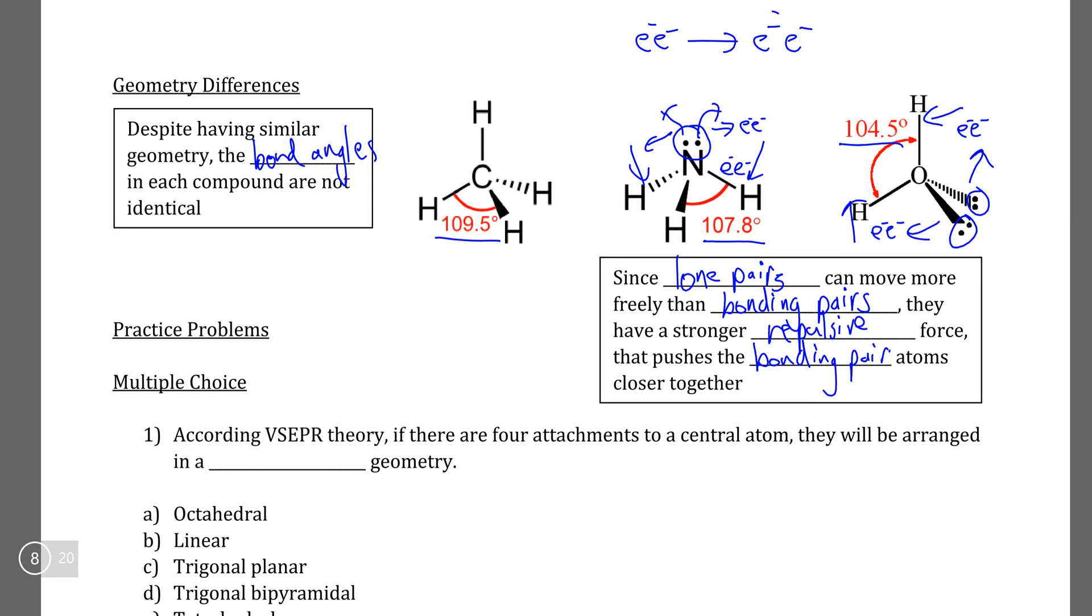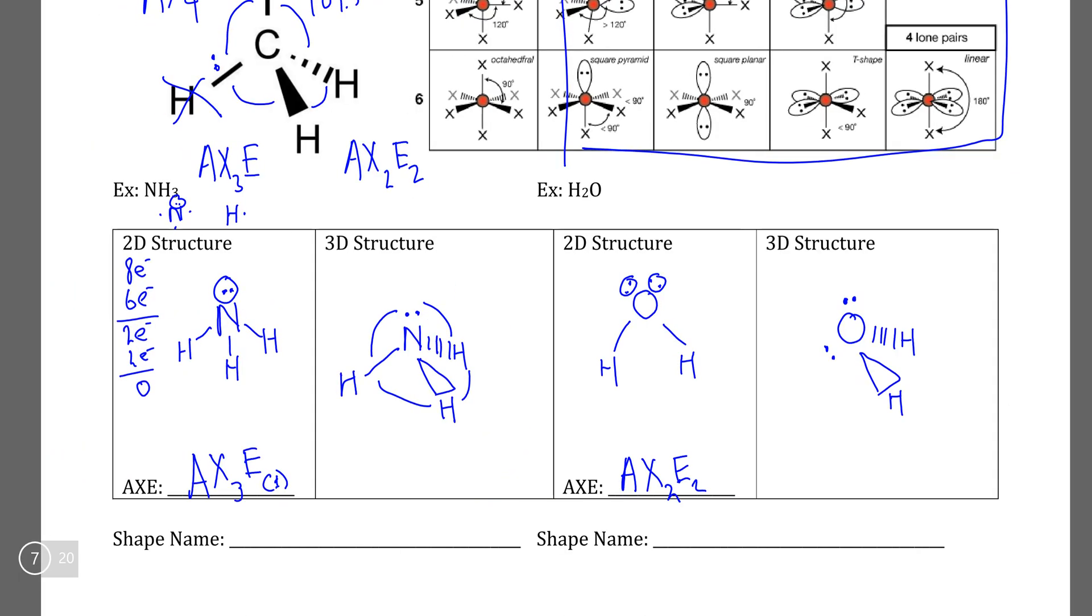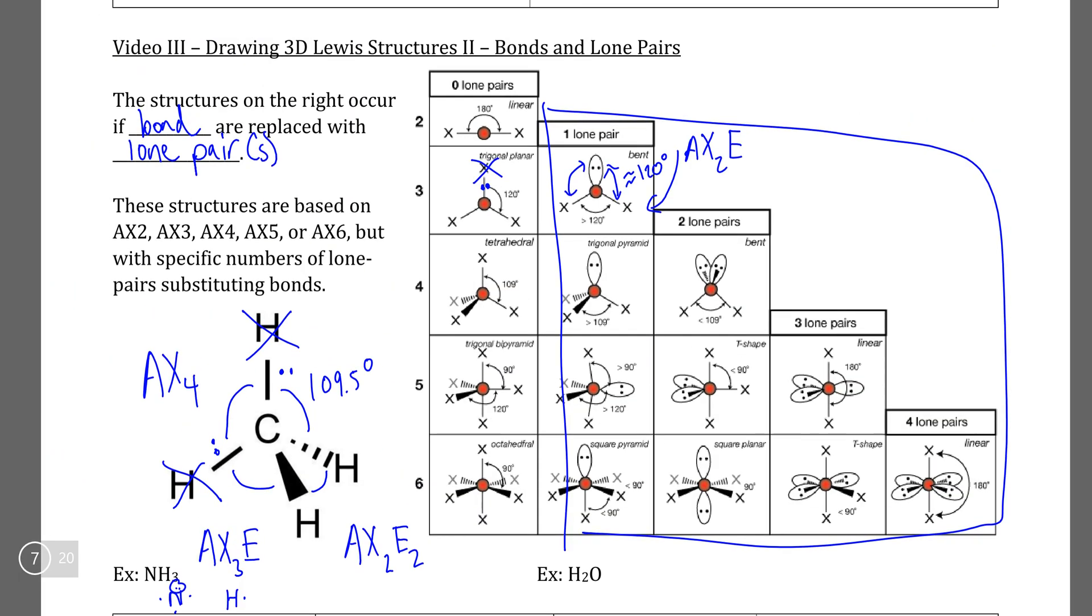And with that, that basically covers all of the content that we have to talk about in terms of drawing 3D Lewis structures. The rest remains up to you to discover the bond angles, the structure names, and the general geometry that exists for all of the different combinations of bonding groups and lone pairs.